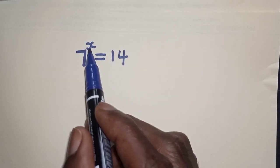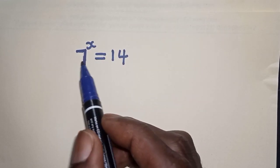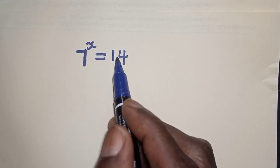Hello, welcome to Math G's. In this class, I want to find the value of s from this equation: 7 raised to power s is equal to 14.